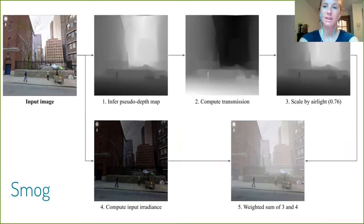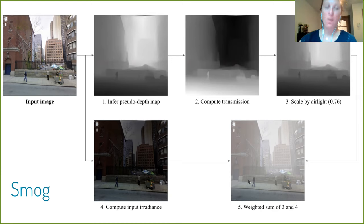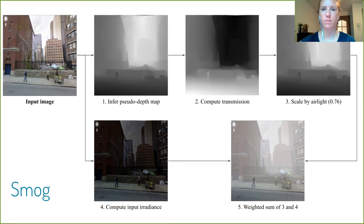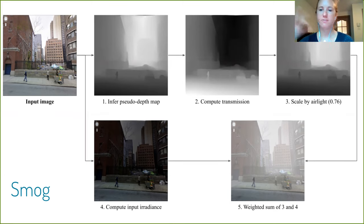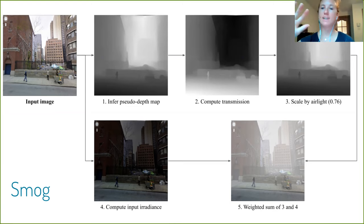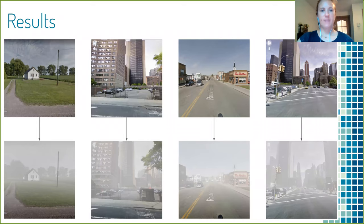The second phenomenon we focused on is smog, which will get worse especially in major cities. Given an input image, we train a model that predicts a depth map — showing what's close and what's further away. We apply filters to add the grainy effect of smog, compute the input irradiance, and randomize the smog color (sometimes white, sometimes yellow). The smog effect is denser far away and less dense close up, which is typically what smog looks like. It works well on different types of scenes from suburbs to downtown.